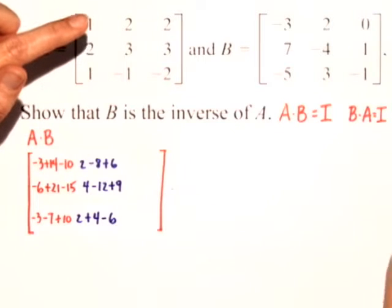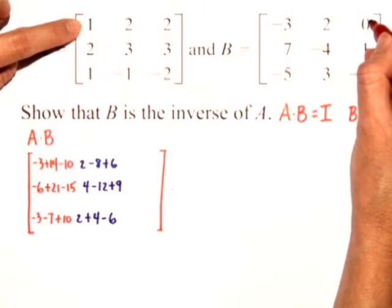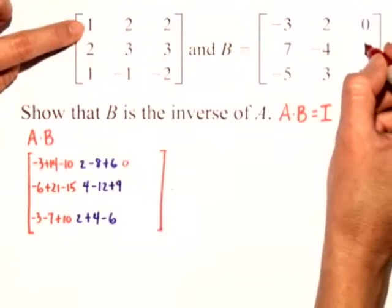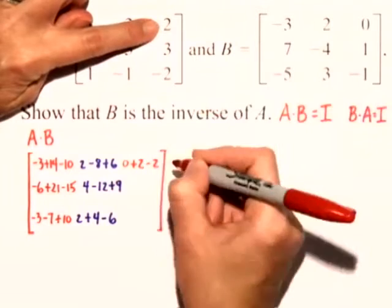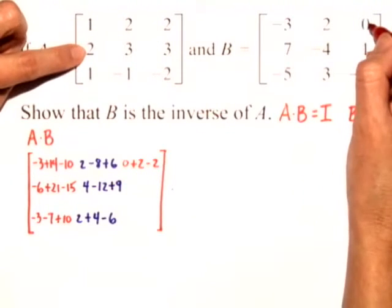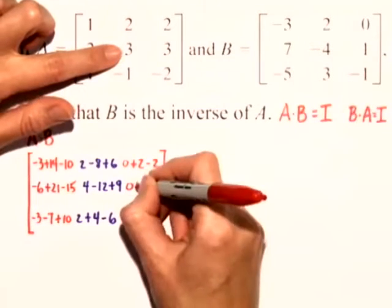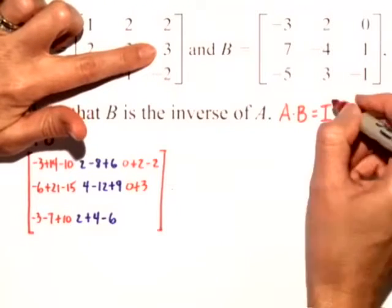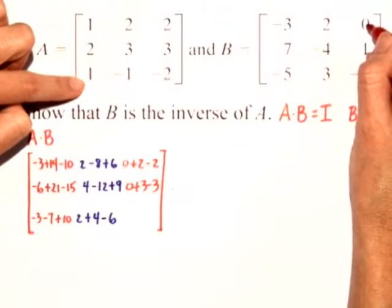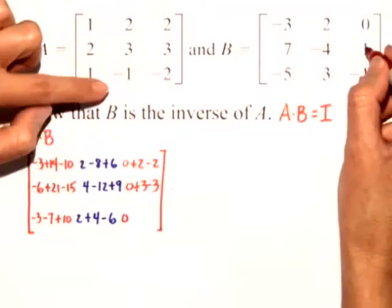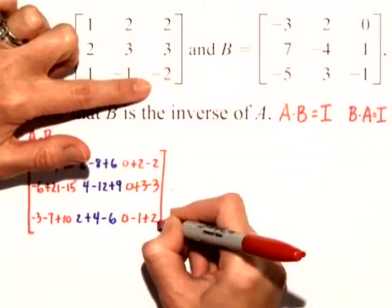Then I'll move back to red for my last column, starting at row 1, column 3. I have 1 times 0 is 0, plus 1 times 2 is 2, plus 2 times negative 1 is minus 2. Row 2 times column 3: 2 times 0 is 0, plus 3 times 1 is 3, plus 3 times negative 1 is minus 3. Row 3, column 3: 1 times 0 is 0, plus negative 1 is minus 1, plus negative 2 times negative 1 is plus 2.